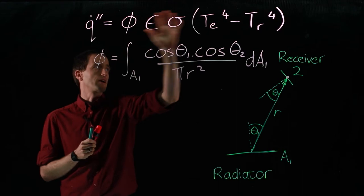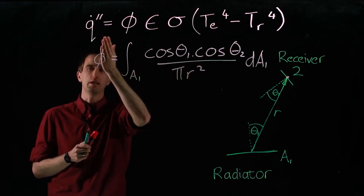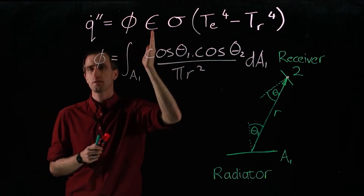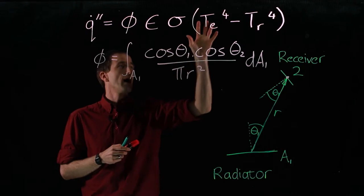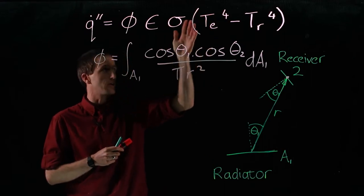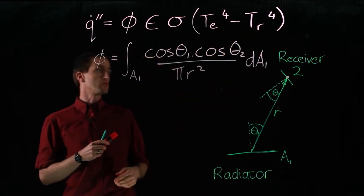Because here's our heat flux. That's how much heat flux is arriving, how much electromagnetic radiation is burning your eyebrows. And that is to do with your configuration factor, times your emissivity, times Stefan-Boltzmann constant. And then the temperature of your emitter to the power of four, and always in Kelvin, be very careful, always in Kelvin, minus the temperature of your receiver to the power of four.